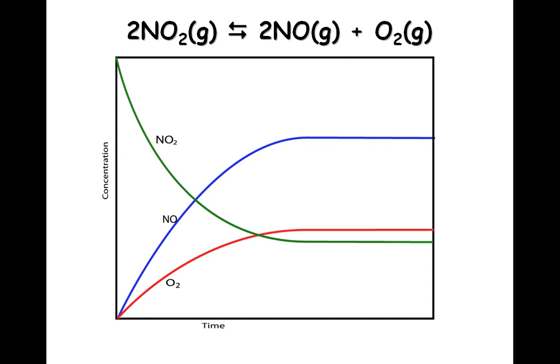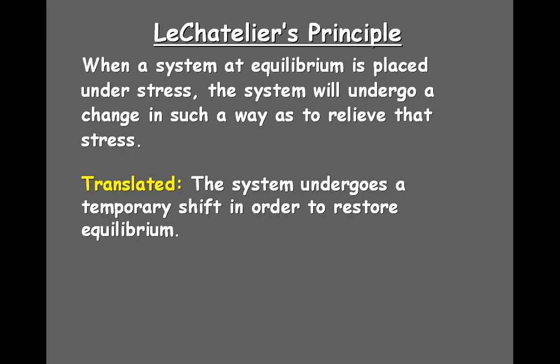Most reactions in the body are equilibrium reactions, so this idea applies directly to biological systems. There is a principle called Le Chatelier's Principle that applies to equilibrium reactions. That principle says: when a system is at equilibrium, the system will undergo a change to relieve a stress. In other words, if you do something to an equilibrium system, the equilibrium system itself will try to restore equilibrium.